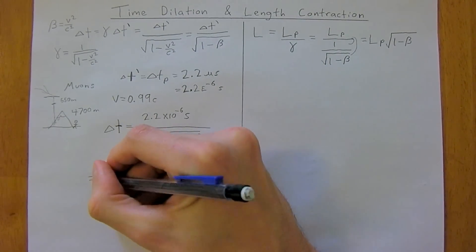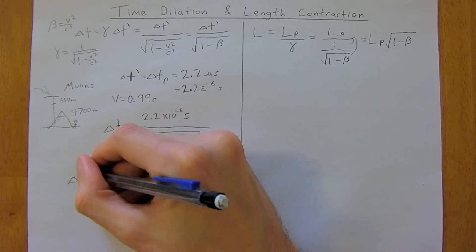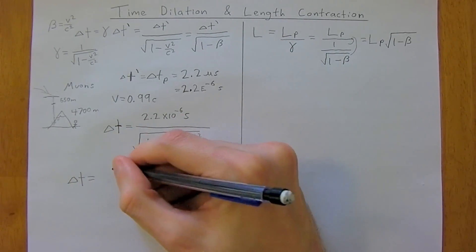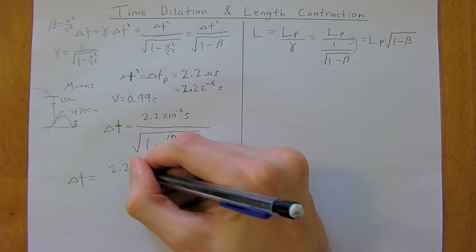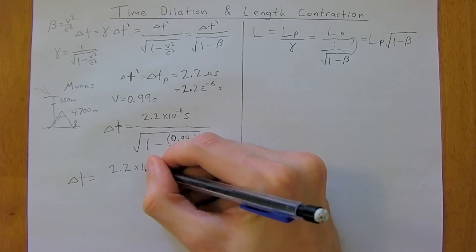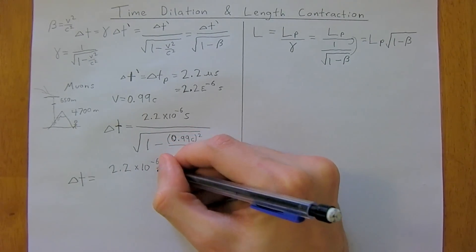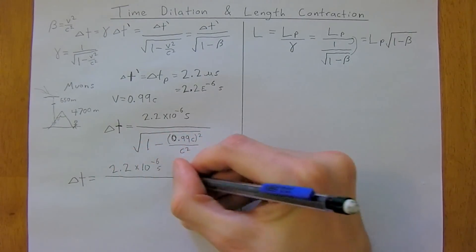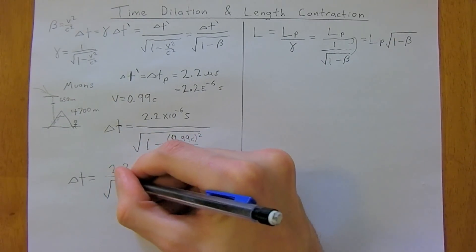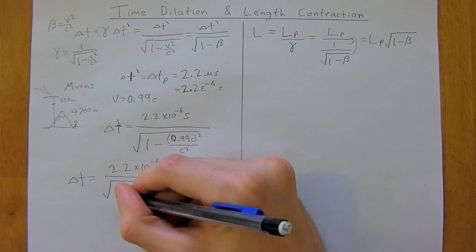So, we can simplify this a bit, and our time, as seen from Earth, is going to be 2.2 times 10 to the negative 6 seconds, divided by the square root of 1 minus,